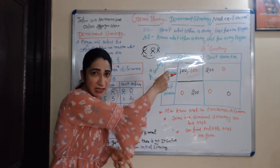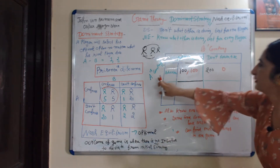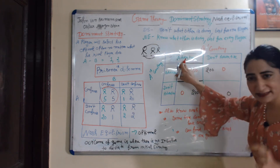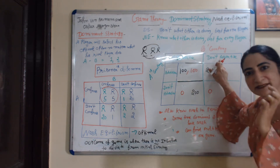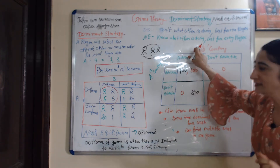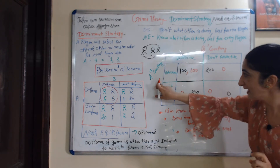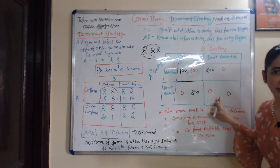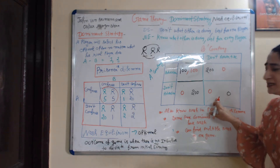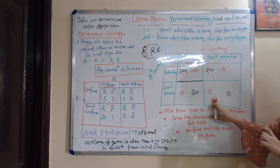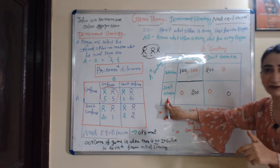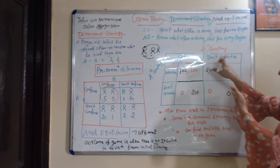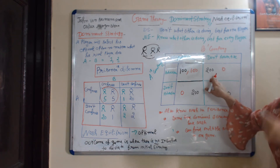We will understand Nash equilibrium with a simple example. There are two firms, A firm and B firm. Both have two options: either advertise their product or don't advertise. If both A and B advertise, each will attract 100 customers. If both don't advertise, they will attract zero customers. If A doesn't advertise but B does, A will attract zero customers and B will attract 200 customers.